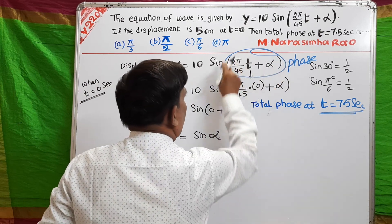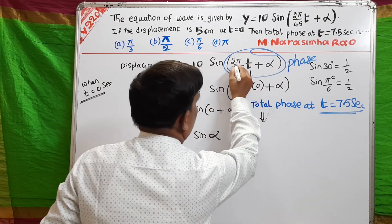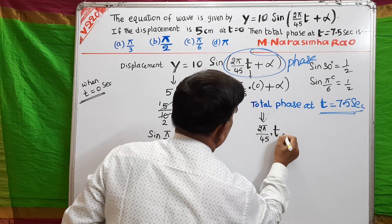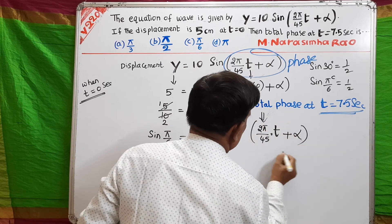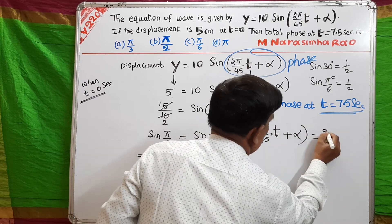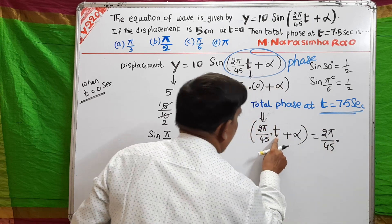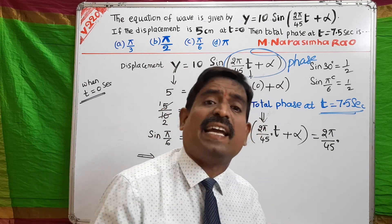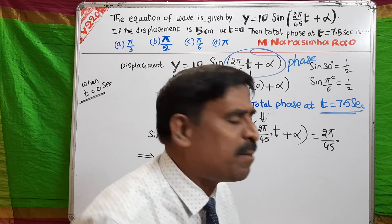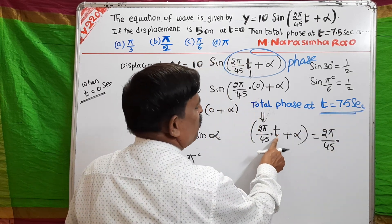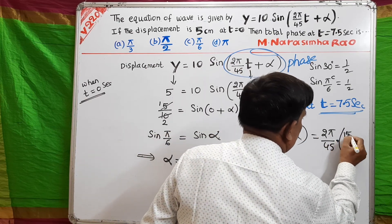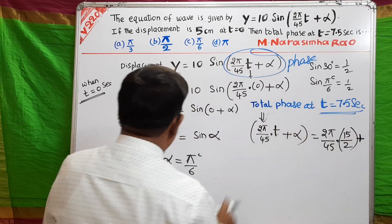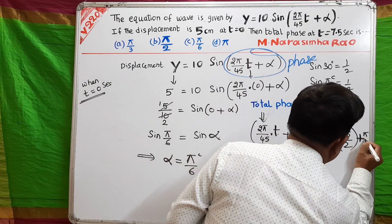The total phase is the total angle: (2π/45) · t + α. Substituting t = 7.5 seconds, which I am writing as 15/2, and alpha = π/6: total phase = (2π/45) · (15/2) + π/6.